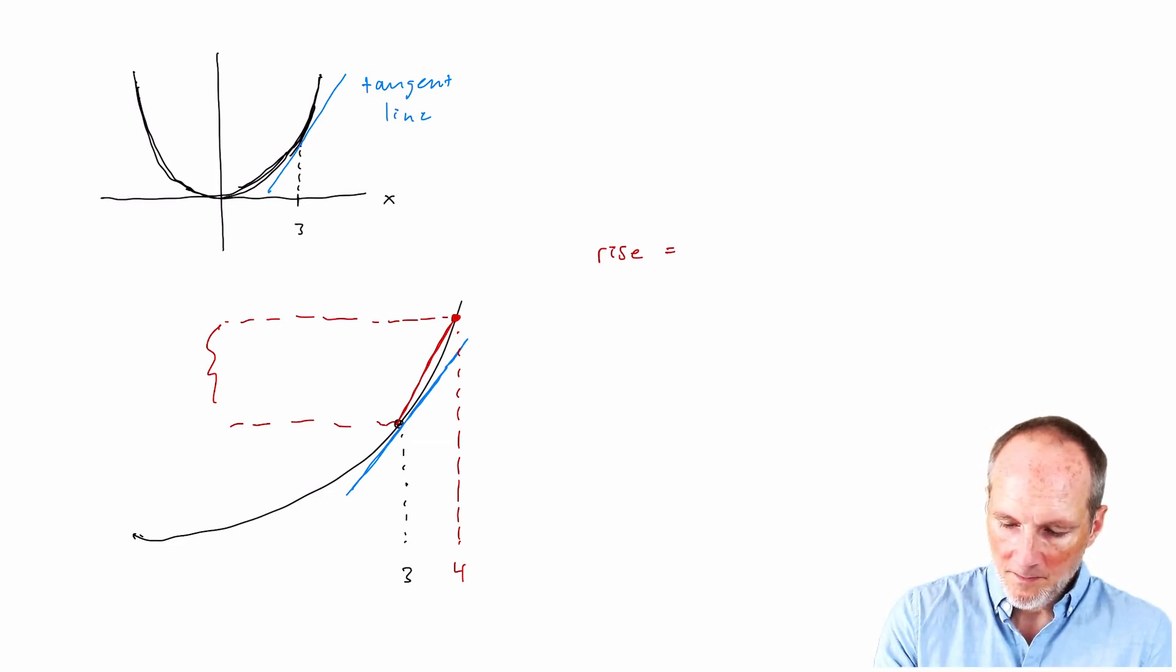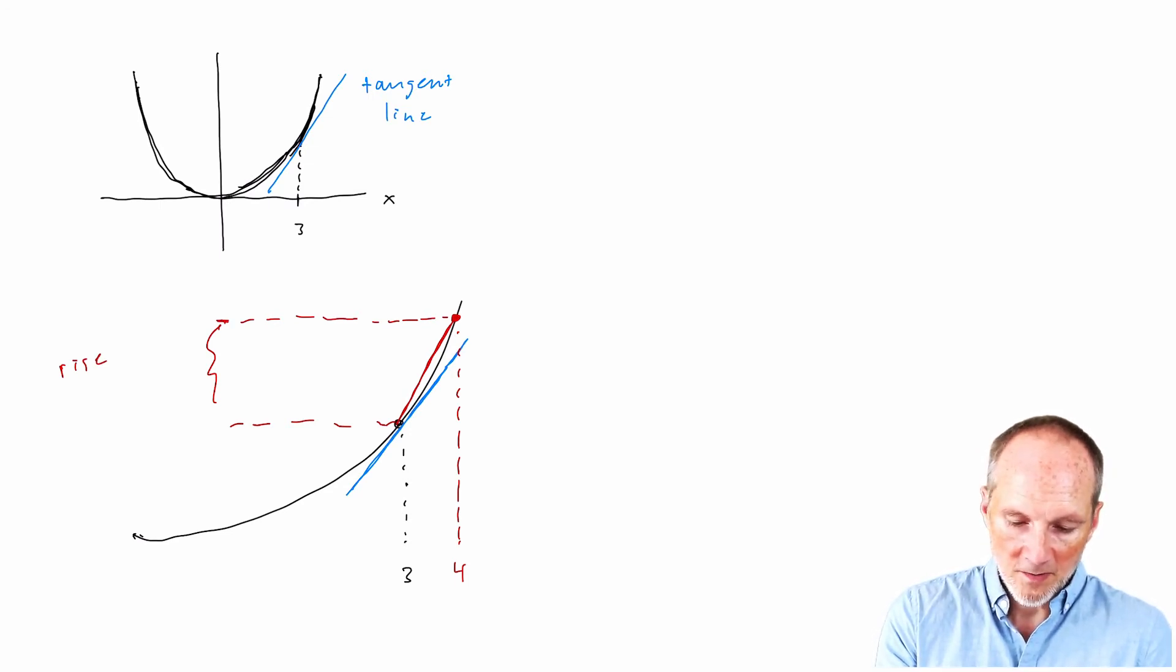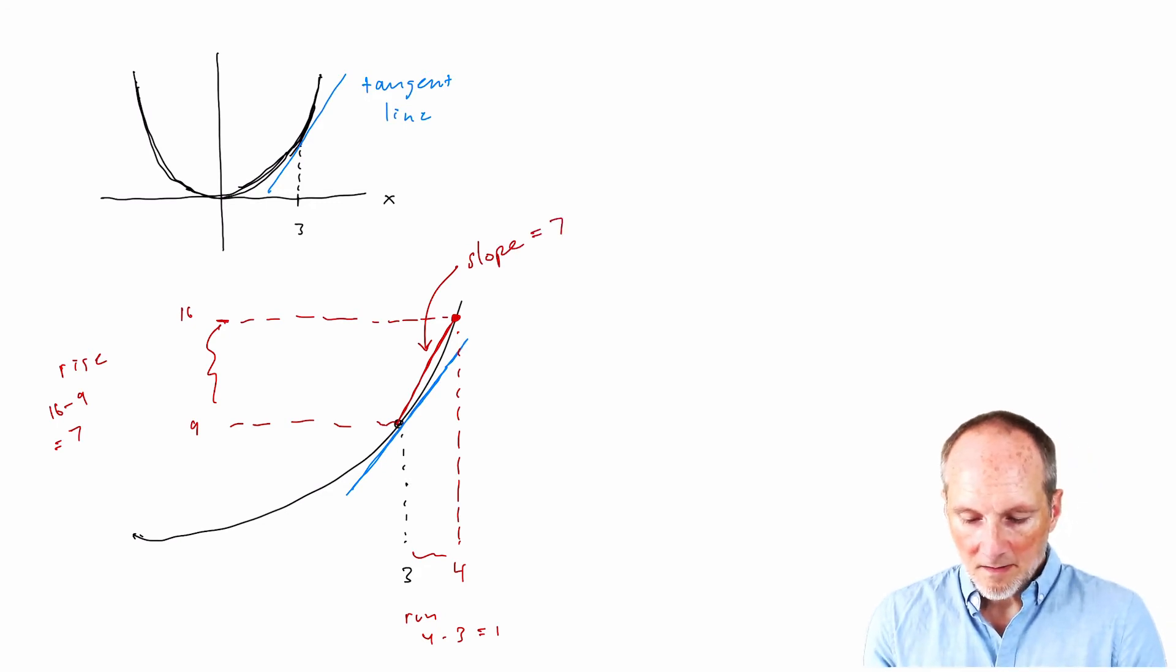Let's ask, what's the slope of this red line here? Well, that we can actually calculate, because the slope of that line is the rise over run. The rise is this value here. So the rise is what? Well, at 4, the value of the function is 4 squared, that's 16. At 3, the value of the function is 3 squared, that's 9. So the rise is 16 minus 9, that's 7. The run is 4 minus 3, that's equal to 1. So the slope of this line is equal to 7.